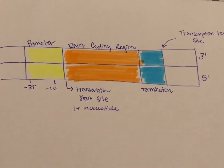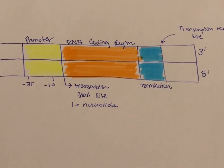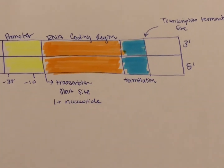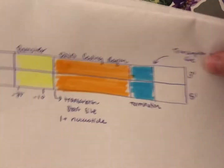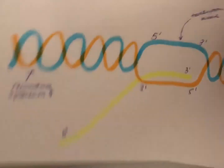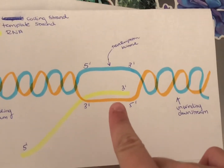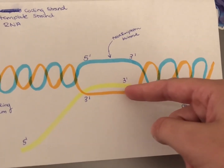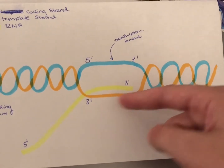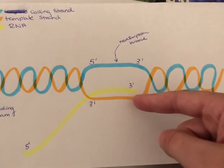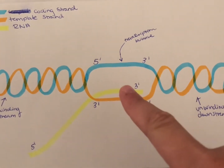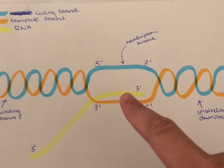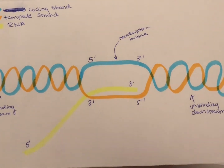Next, chain initiation begins and transcription starts at the +1 nucleotide region, which you can see here. The unwinding of the coding and template strand begins, forming the transcription bubble as seen in this diagram. You can also see the coding strand, the template strand on which the RNA begins to form, and the forming RNA sequence here. This transcription bubble begins to move after the sigma factor is removed and a 9 to 12 nucleotide long strand of RNA is formed.